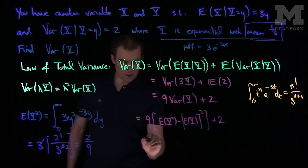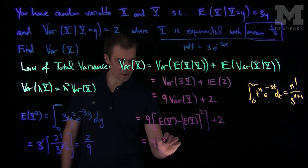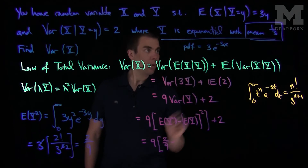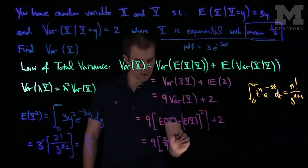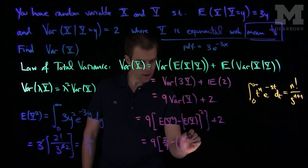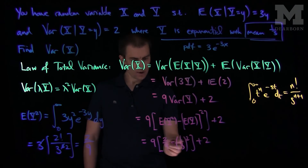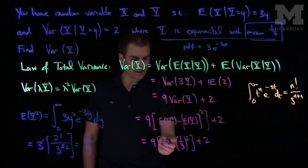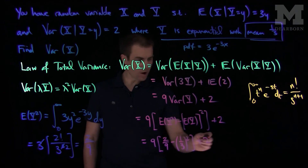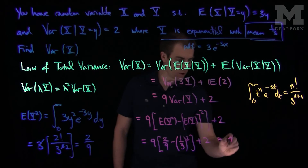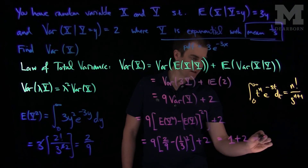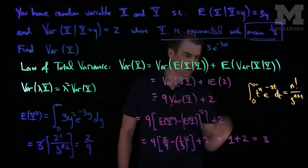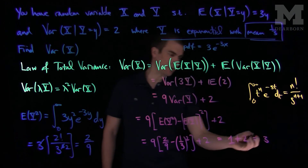From that I have to subtract off the mean squared, so the variance of y equals E[y²] minus (mean of y)². So this will be 9 times (2/9 minus (1/3)²) plus 2. That's 2/9 minus 1/9, which is 1/9. Then 1/9 times 9 is 1. So this is 1 plus 2, and my final answer is 3. The variance of x is 3.